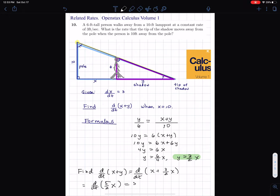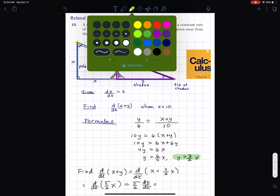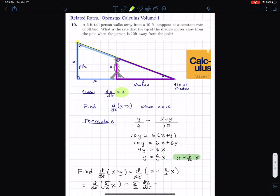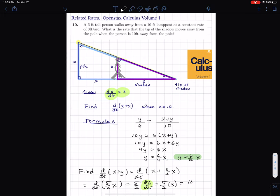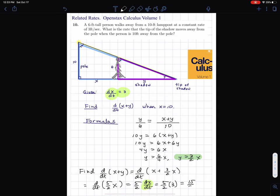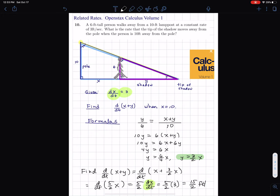So this is going to give 5 halves times dx/dt. Well, dx/dt is given. dx/dt was given as being 3. So I'm going to use that again. dx/dt is 3. I'm going to put that in there. So I get 5 halves times 3, and that makes 15 halves feet per second.